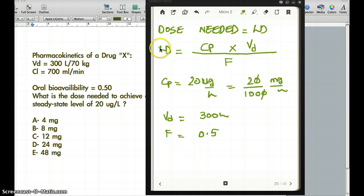So, moving from here to here, we get CP is 2 by 100 milligram per liter times VD is 300 liter times 1 by 0.5. And then liter, liter, cancel out. And what do we get? So when we compute all this, we get 12 milligram.